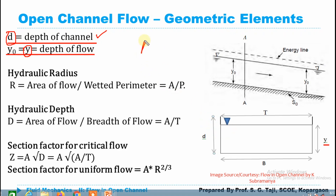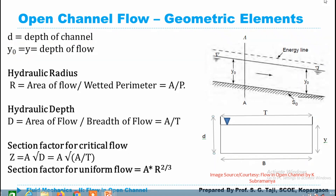Next, A is the area of flow. This means we are considering the cross-sectional area of the flowing liquid — not the area of the entire channel. The area of flow is the wetted cross-section, so the area of the channel would be more than the area of flow.